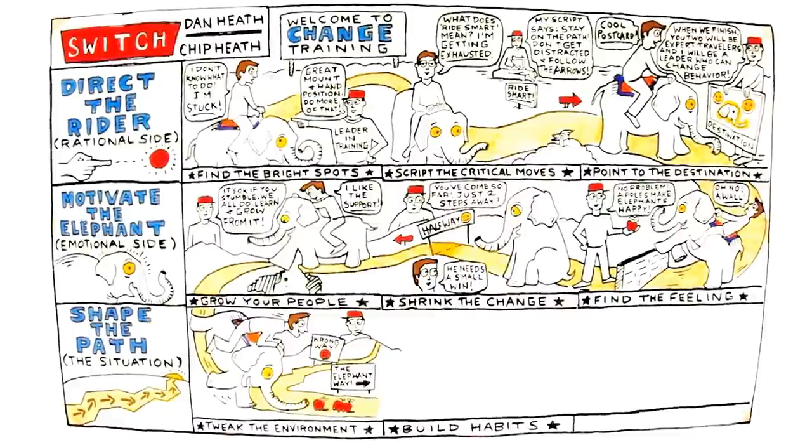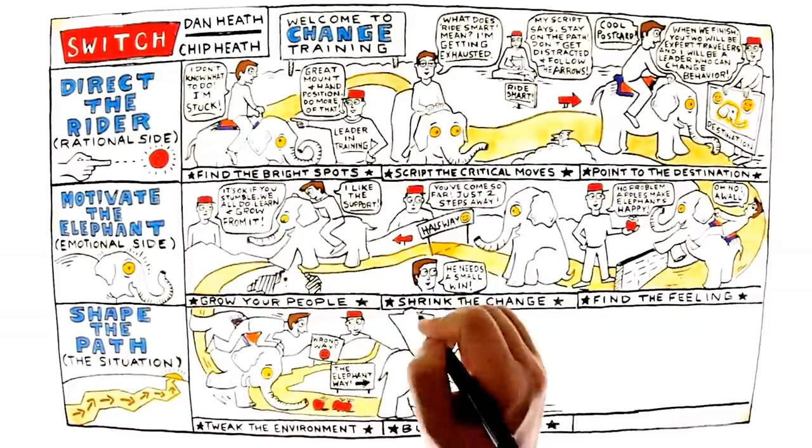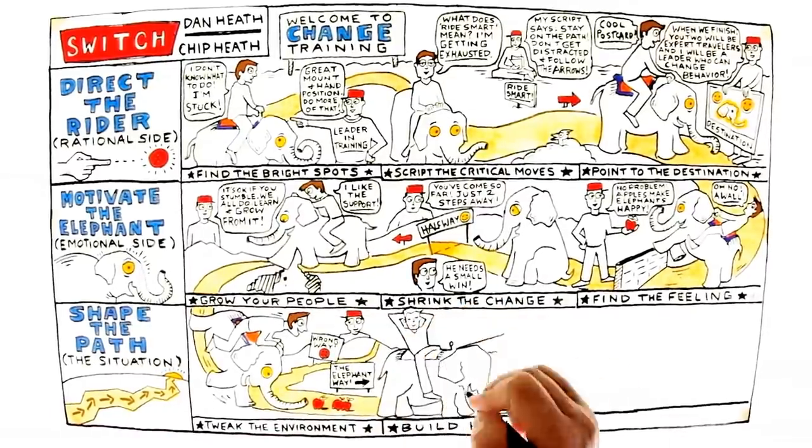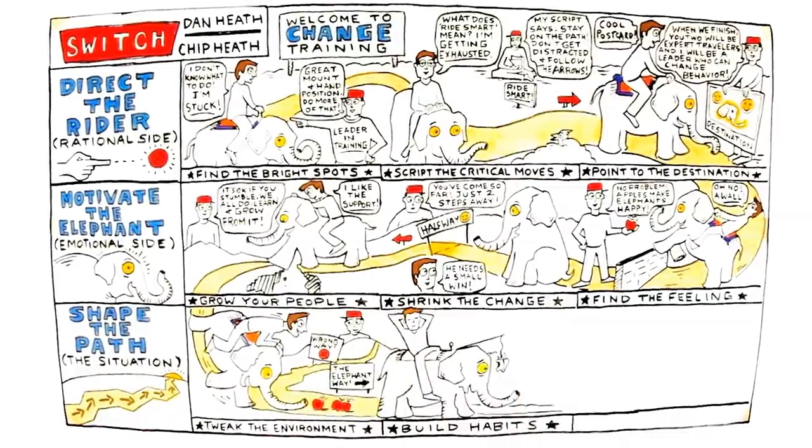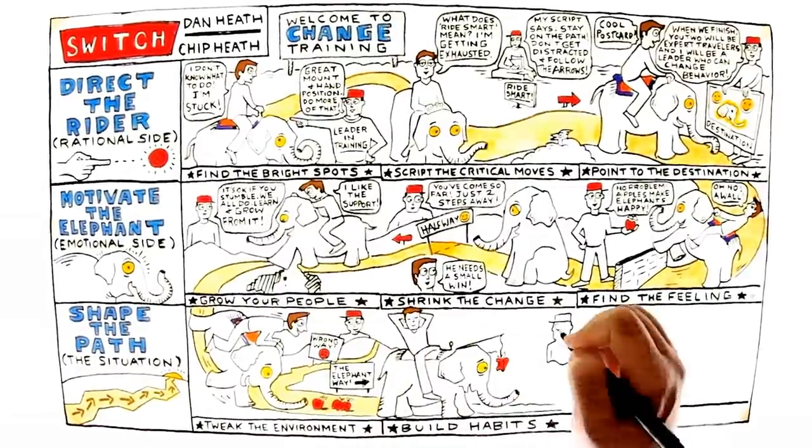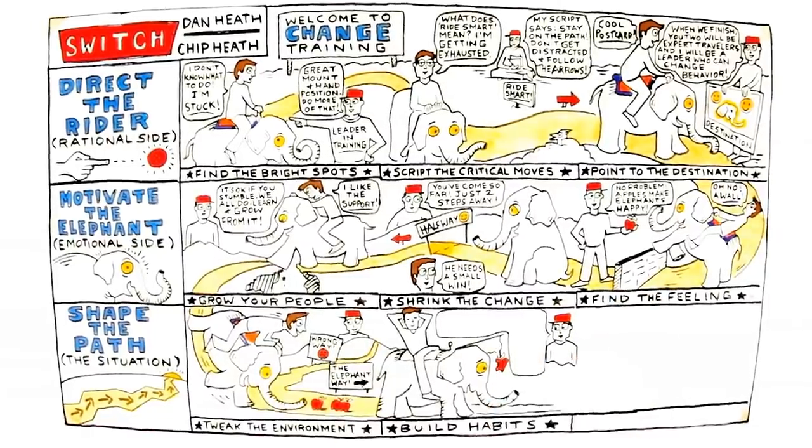Build habits. To change people, you must learn how to change their habits. If the right habits are in place, good behaviors follow and the rider does not have to take charge. The Heath Brothers call this behavioral autopilot.